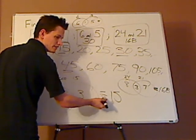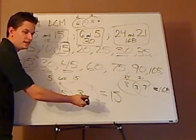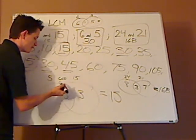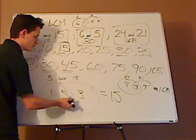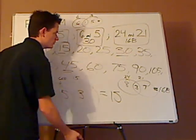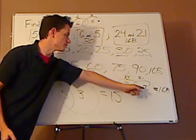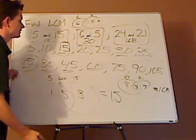You do the same thing on the other side. And then to find the LCM or the LCD, you simply multiply them. So here would be 1 times 5 times 3, which gives you 15. Here would be 8 times 3 times 7, which gives you 168.